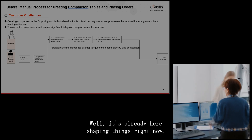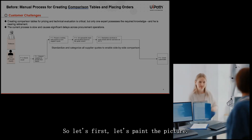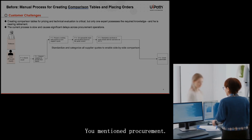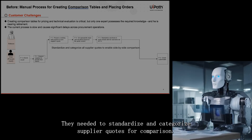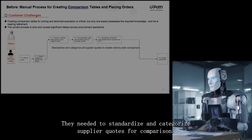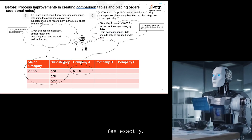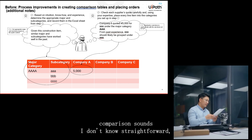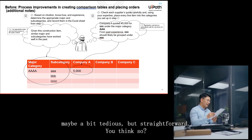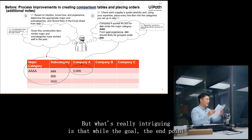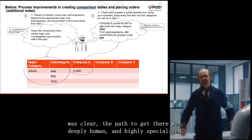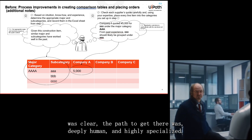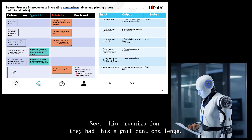Let's paint the picture of what this process looked like before the big change. In procurement, they needed to standardize and categorize supplier quotes for comparison — a proper side-by-side comparison. While the goal was clear, the path to get there was deeply human and highly specialized.